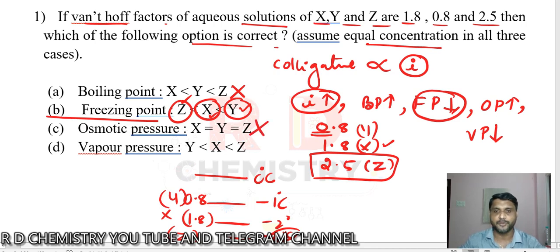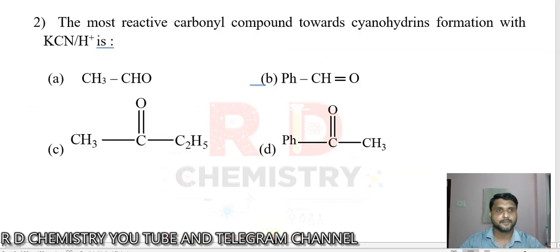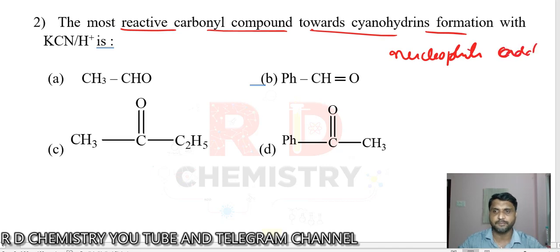Osmotic pressure cannot be same for all because there are different i values. Vapor pressure, as the i value increases, vapor pressure decreases. It is also not matching. So the exact answer is option number B.